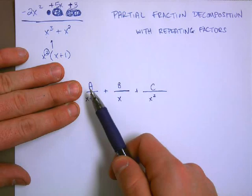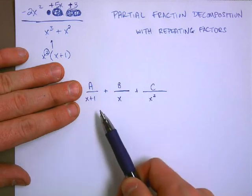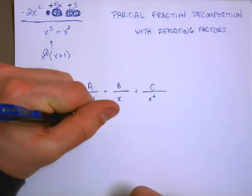And the common denominator is going to be x squared times x plus 1. So I see here that my a is missing the x squared term. So I need to take a times x squared.